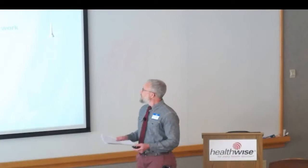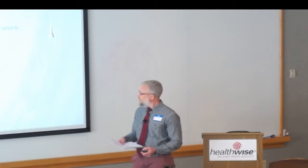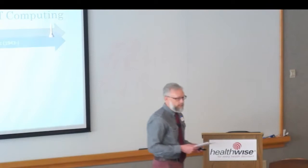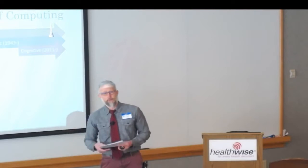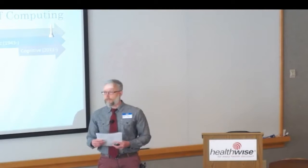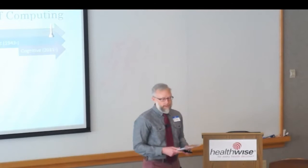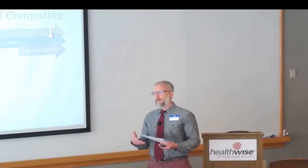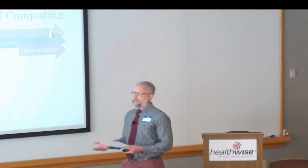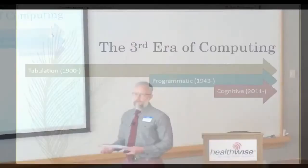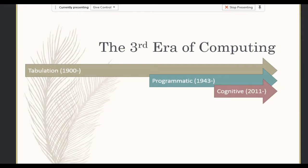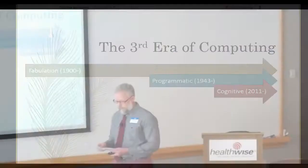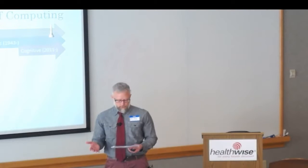This question is becoming more important today because we're seeing the emergence of what some people are calling the third era of computing. The first era started after the 1890 census, when it took us seven years to collate and understand the data we had collected. That was simply too long. So a man named Hollerith decided to invent something called a tabulator. He then went on to found IBM, which created accounting machines based on the tabulator. Then in about 1943, the programmatic era of computing started, when Colossus was released by the UK to help in the war effort, followed three years later by ENIAC in 1946.